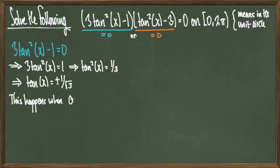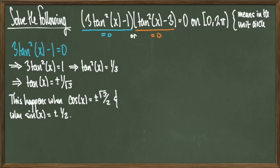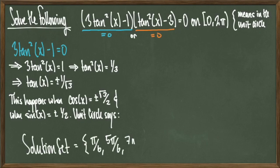Since tangent equals sine over cosine of x, it turns out that if cosine of x equals plus or minus root 3 over 2 and sine of x equals plus or minus 1 over 2, then tan of x will equal plus or minus 1 over the square root of 3. This is because plus or minus 1/2 divided by plus or minus root 3 over 2 equals plus or minus 1 over root 3. The unit circle tells us the x values are pi over 6, 5 pi over 6, 7 pi over 6, and 11 pi over 6.